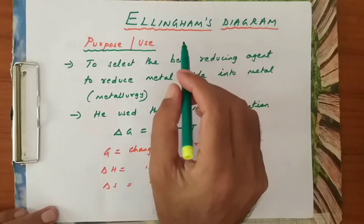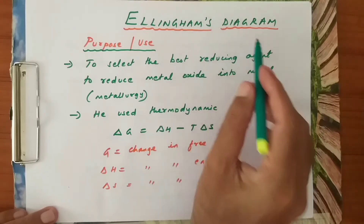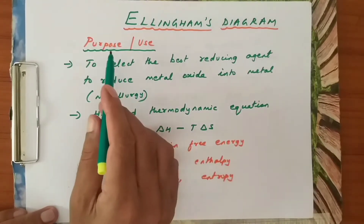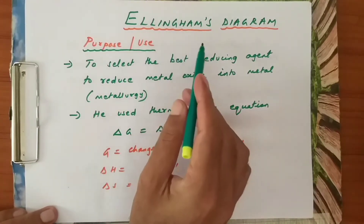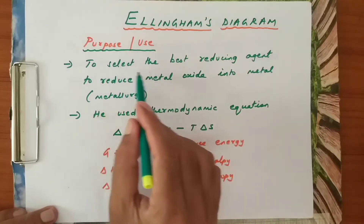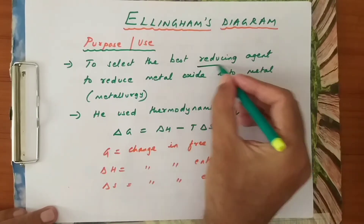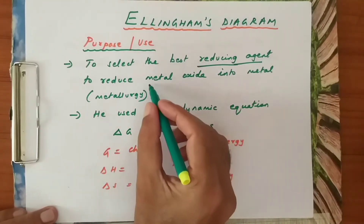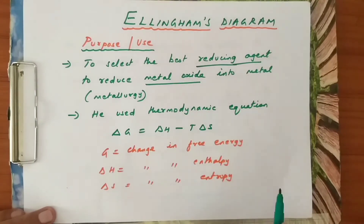In this video I will discuss Ellingham's diagram. The purpose of Ellingham's diagram is to select the best reducing agent to reduce metal oxide into metal.